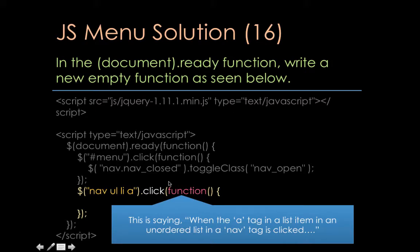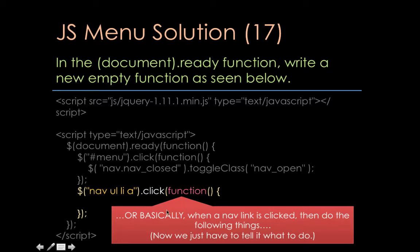Here's how we could look at writing it. Everything grayed out is stuff we already have. If you look at the syntax where it says nav U-L L-I A in quotation marks, that's the descendant rule it's targeting. Anytime somebody clicks on that anchor inside the list item, inside the unordered list that's inside of nav, something will happen. An easier way to think about it: basically when a nav link is clicked — because we don't have any other nav links — do one of the following things.